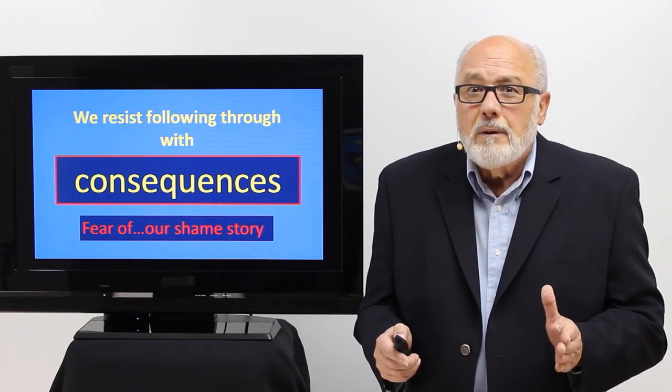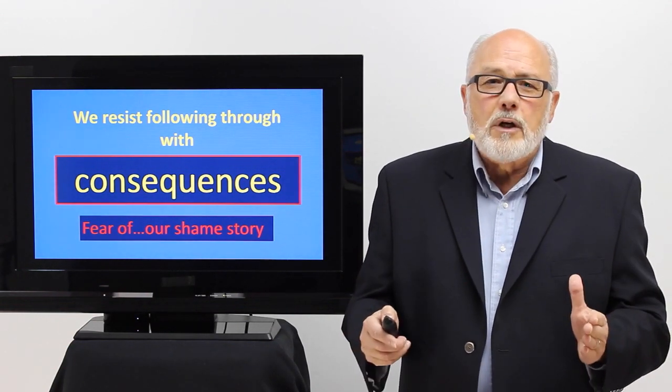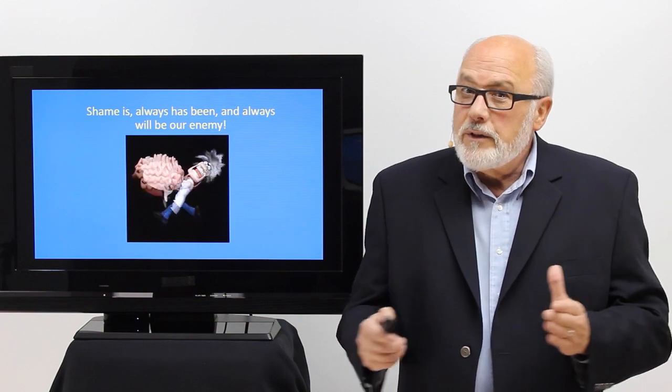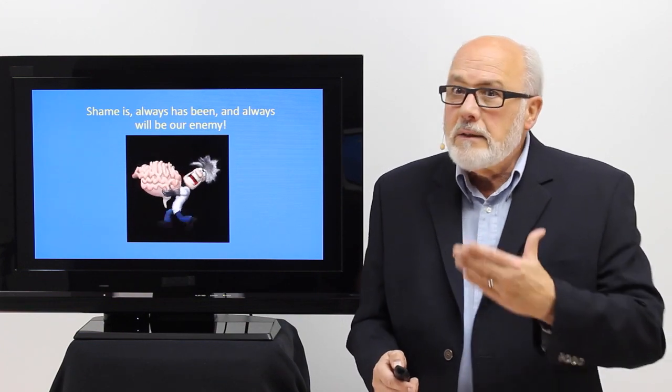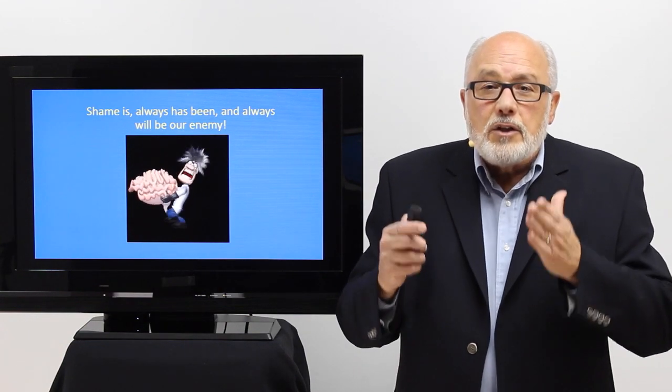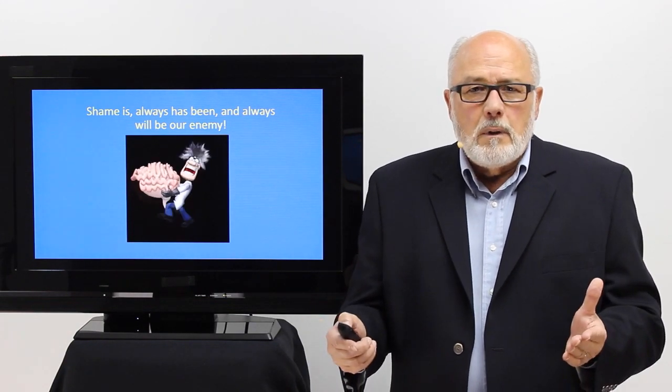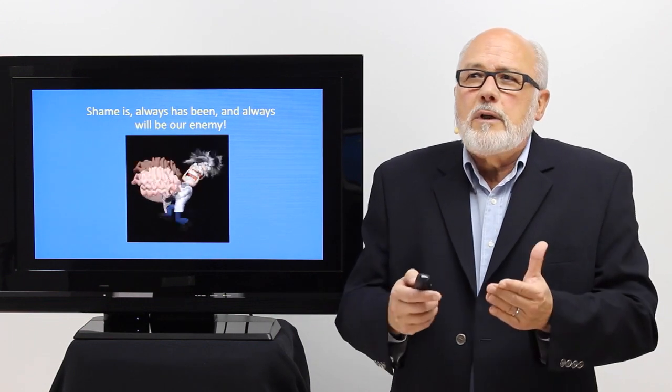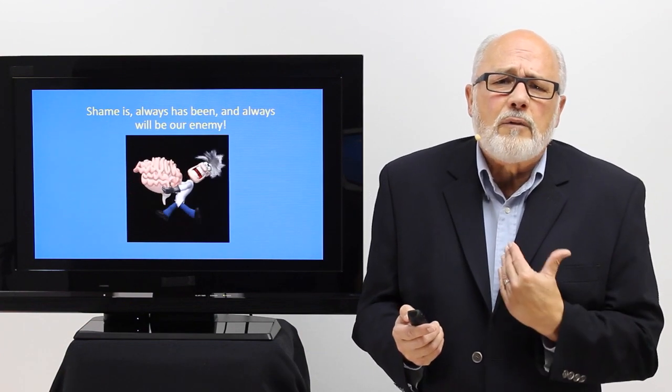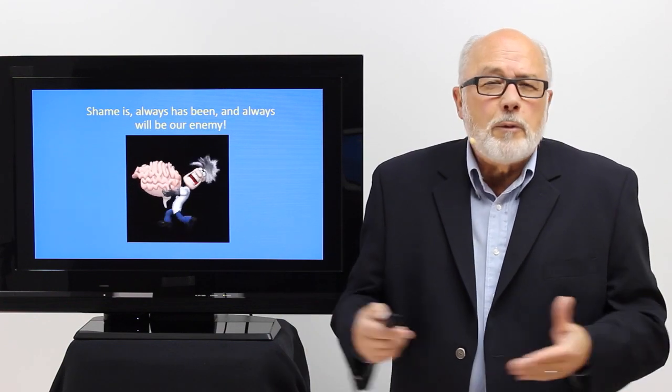Now, if you can stop that, then you can follow through with the boundaries and consequences you set. You can change your life. You can have a radical transformation of relationship and life. Now, remember shame is, always has been, and always will be your enemy. It's not that other person in your life. It's the shame that has hijacked the lower part of your brain. That's what cripples you. That's what keeps us in prison. That prohibits us from achieving the dreams we want and long for, the longing of our heart, which we deserve. We're worthy to be loved and cherished and cared for and to be safe.